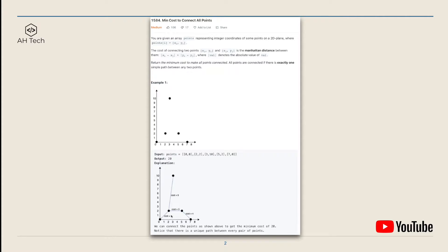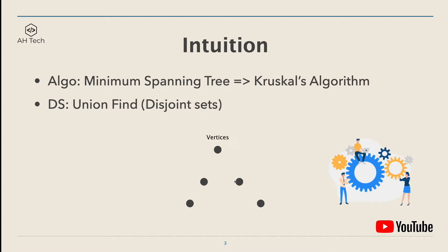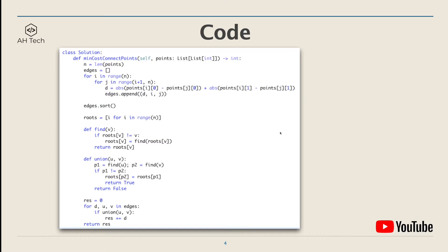For example one, we can connect the points so that the total minimum cost is 20. This question is a classic example of building a minimum spanning tree in a weighted undirected graph. You can think of the points as the vertices of the graph, and we have to build the minimum spanning tree to connect all points, which has n minus one edges and also has minimum cost. The key algorithm to build the minimum spanning tree is Kruskal's algorithm, and the data structure we will use is a union-find, also called disjoint sets.